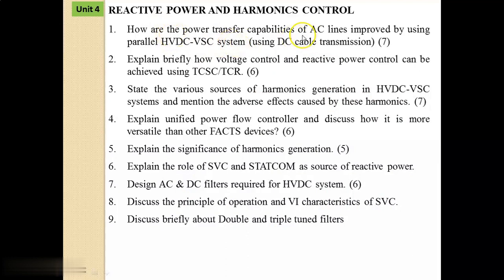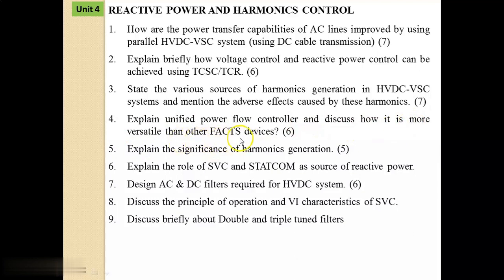First: How are the power transfer capabilities of AC lines improved by using a parallel HVDC VSC system, i.e. using DC cable transmission? Second: Explain briefly how voltage control and reactive power control can be achieved using TCSC and TCR. Third: State the various sources of harmonics generation in HVDC VSC systems and mention the adverse effects caused by these harmonics. Fourth: Explain UPFC, i.e. Unified Power Flow Controller, and discuss how it is more versatile than other FACTS devices.